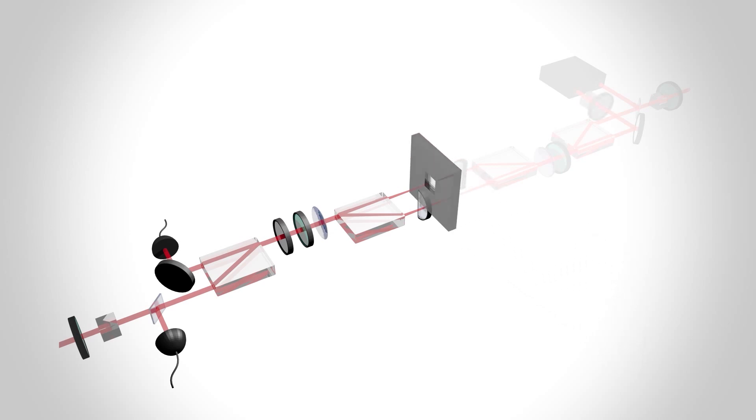The two beams of light are then recombined to interfere, and we count how many photons are in each output. A key aspect of our approach is whenever we observe exactly two photons, one in each output port, we know that due to the Hong-Ou-Mandel effect, the only way this can happen is if we had an entangled state inside the interferometer.